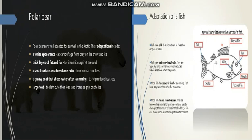The second adaptation is that fish have a streamlined body. They are typically long and narrow, which reduces water resistance when they swim. Their body shape is well suited for swimming, and they can easily move through the water.